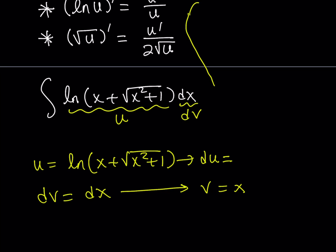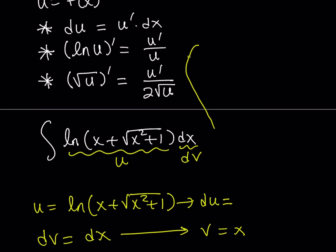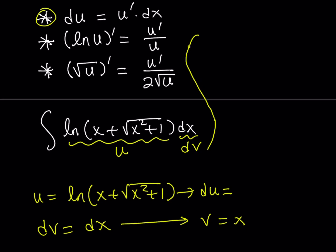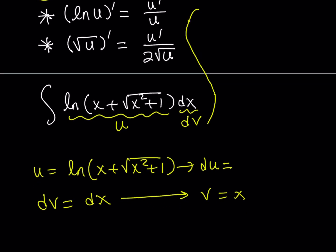So our expression — how do you find du? By definition, du means you differentiate u and then multiply by dx. Let's differentiate this function first. If u is equal to ln of x plus the square root of x squared plus 1, to find du I have to differentiate the function first. How do you differentiate an ln function? U prime over u — that's the formula we're going to use.